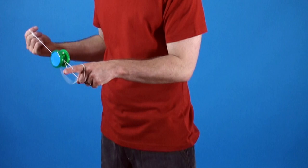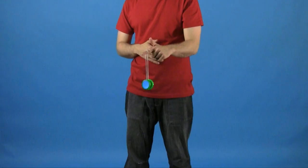Then the outside string of that hoop is going to wrap right underneath the yoyo and that is what is going to form your hook.